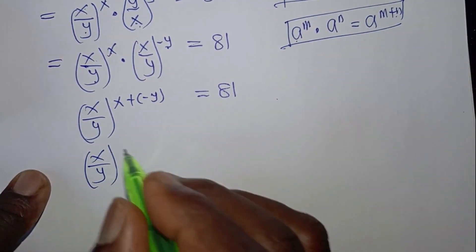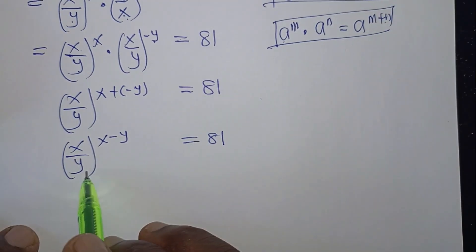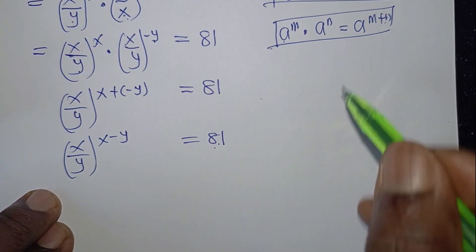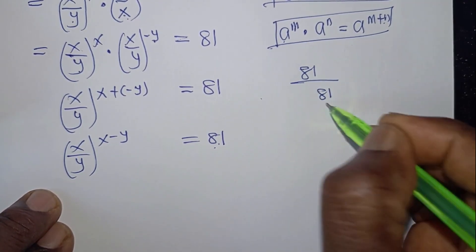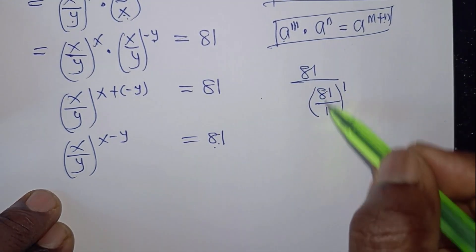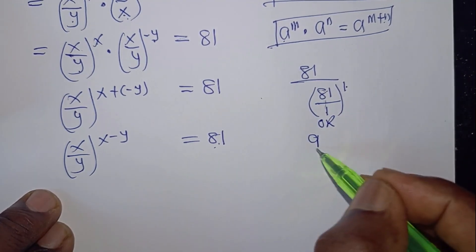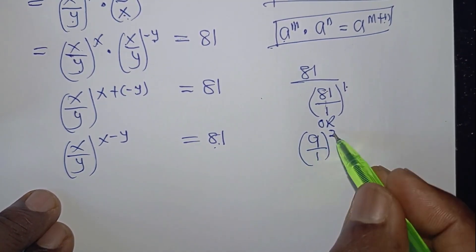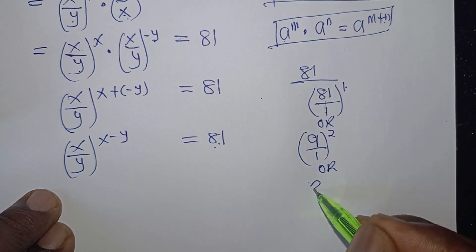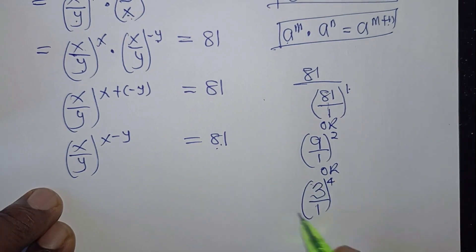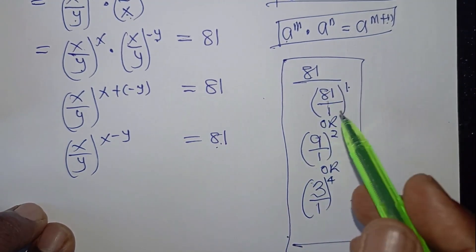So we have (x over y) to the power x minus y equals 81. Now we are going to express 81 in the form of this. 81 can be expressed as: (81 over 1) to the power 1; or (9 over 1) squared — 9 squared gives us 81; or 3 to the power 4, that is (3 over 1) to the power 4. We are going to try each case and see which one gives integer values for x and y.